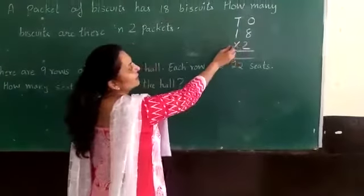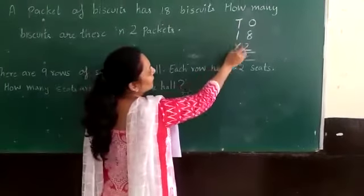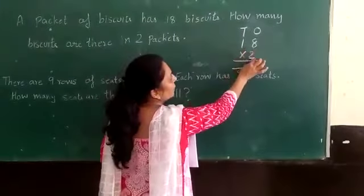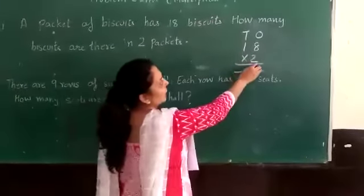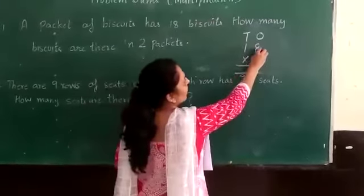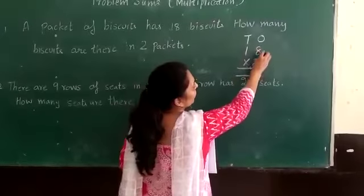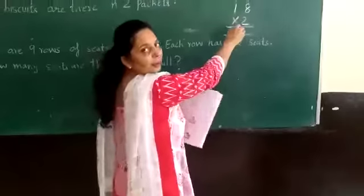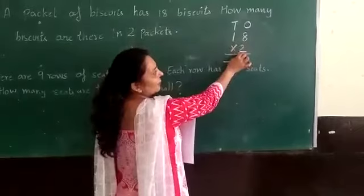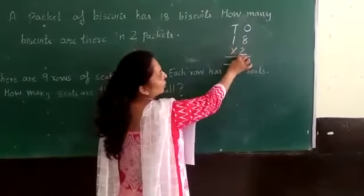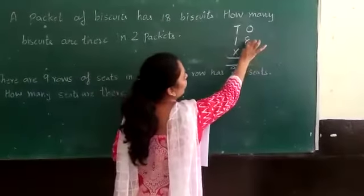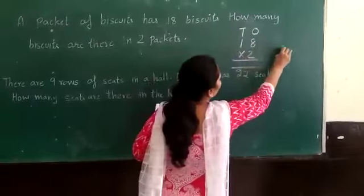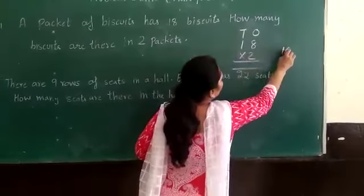How do we solve it? Students, we will do 80 multiply by 2. We will say 8 — 2 eights are 16.